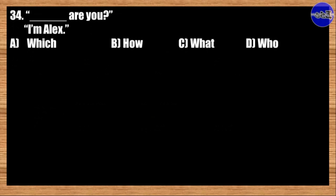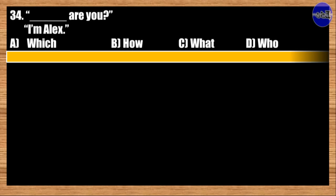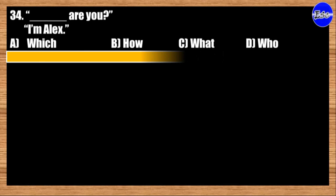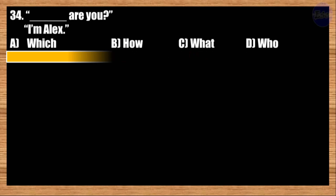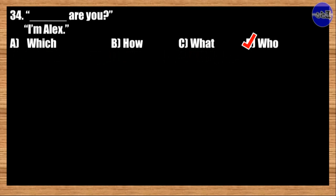Number thirty-four: Blank are you? I'm Alex. A: Which; B: How; C: What; D: Who. The best answer is option D. Who are you? I'm Alex.